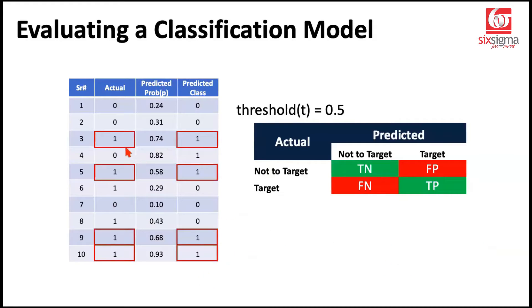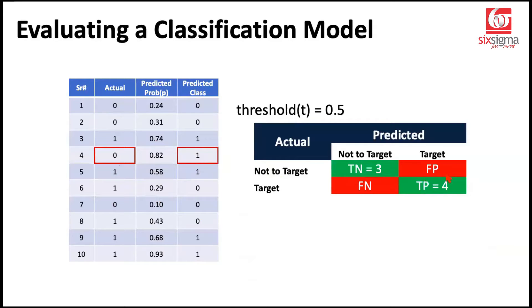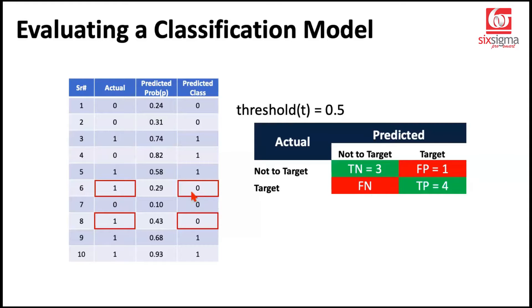Let's quickly populate this confusion matrix. We identify all ones classified as ones — these are our true positives, count is four. All zeros correctly identified are three true negatives. For false positives, cases where an actual zero was called a one — just one instance. And finally, false negatives, ones classified as zero by the model — two cases. Our confusion matrix is now up to date.